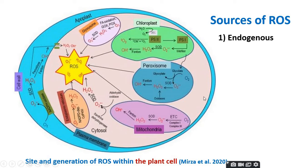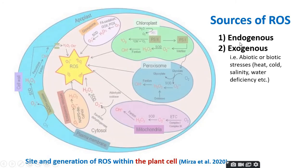On the other hand, some ROS are produced exogenously, meaning due to the effect of abiotic or biotic stresses. Abiotic stresses include harsh environmental conditions such as heat, cold, salinity, and water deficiency. Biotic stresses are caused by insects, pathogens, and so on.